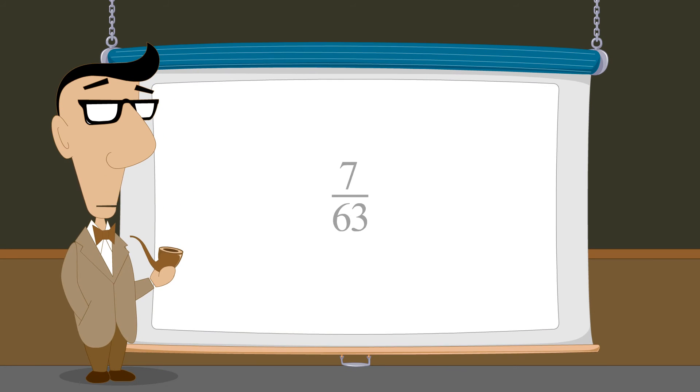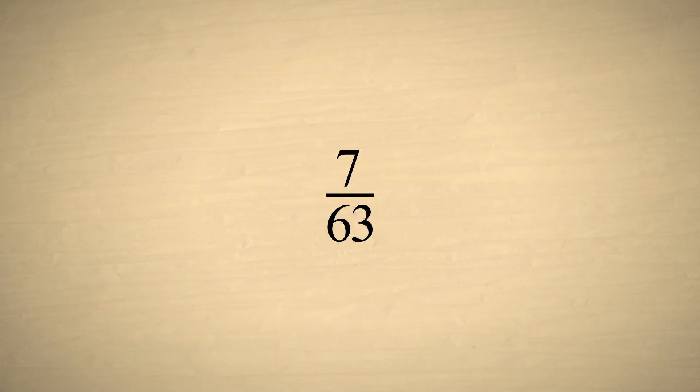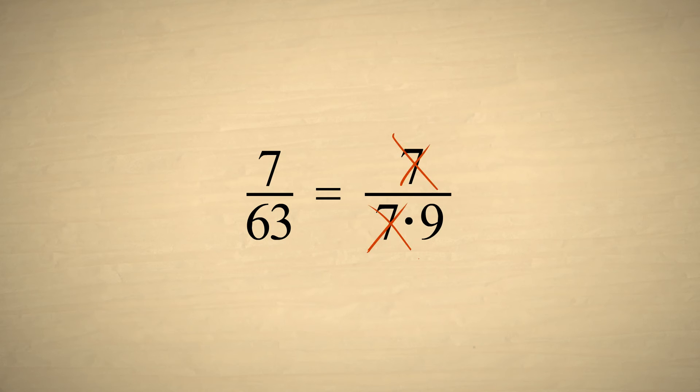As our last example, let's reduce seven sixty-thirds. The seven in the top is a prime number, but we can factor the sixty-three in the bottom. When we cancel out the factors of seven in the top and bottom, we will be left with a nine in the bottom. But what about the top? Since seven is the same as seven times one, when we cancel out the sevens, we are left with one-ninth.